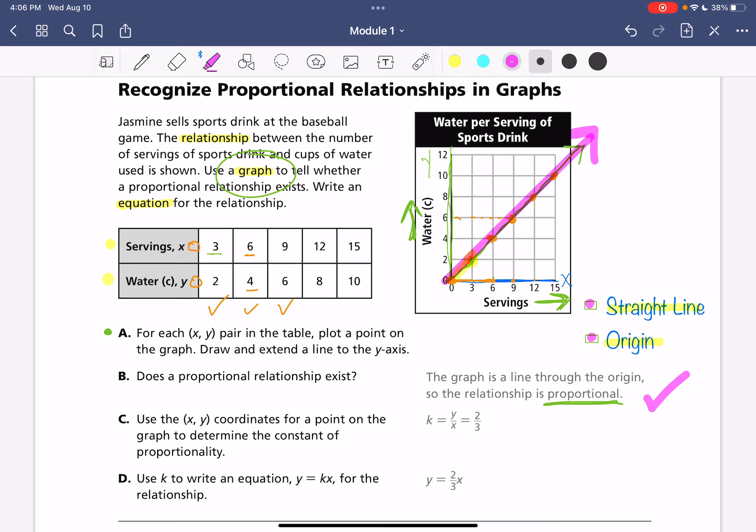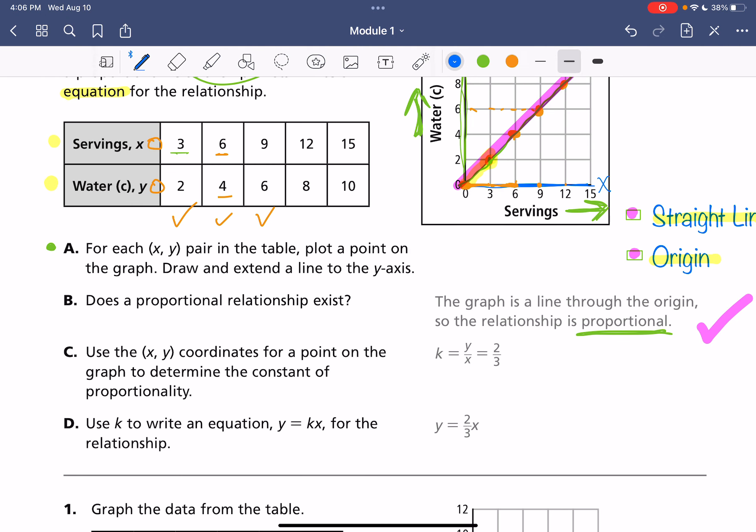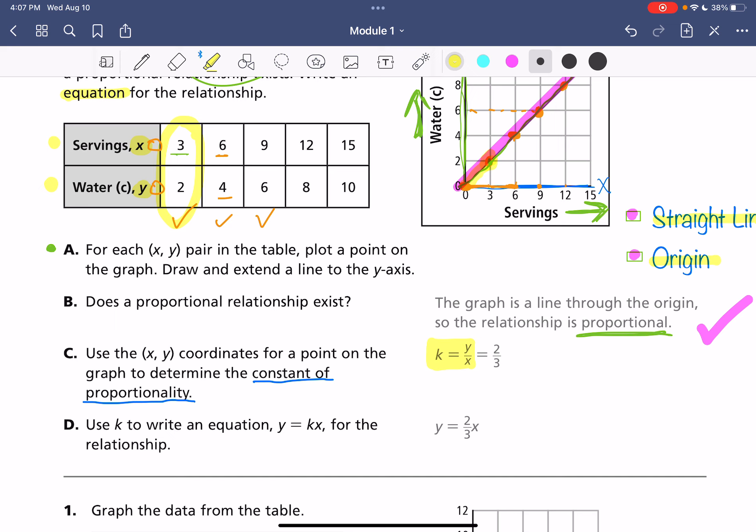And then our k, which is our rate of change, our constant of proportionality, that is found with this formula here. So highlight that, put a box around it, whatever you need to do to keep that nice and important there. K equals y over x. So that's our general formula. And we're going to plug in, they did this first point here. y, so 2 is on the top, and then x is our denominator. So 2 thirds is our constant of proportionality. And you might ask, well, what if I did my other points? What if I did 12, 8 or 6, 4?